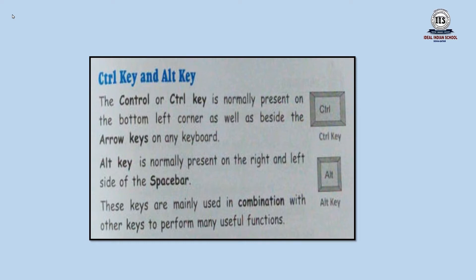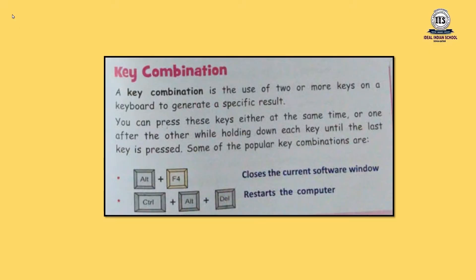Control key and Alt key. The Control or CTRL key is normally present on the bottom left corner as well as beside the arrow keys on a keyboard. Alt key is normally present on the right and left side of the space bar. These keys are mainly used in combination with other keys to perform many useful functions. A key combination uses two or more keys on a keyboard to generate a specific result. You can press these keys either at the same time or one after the other while holding down each key until the last key is pressed.